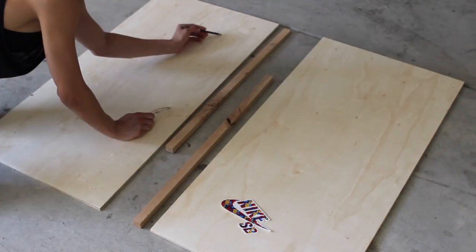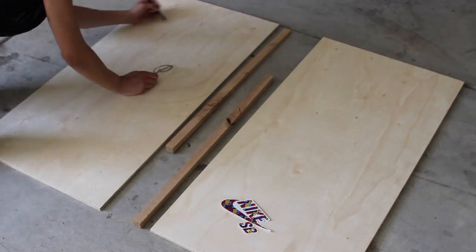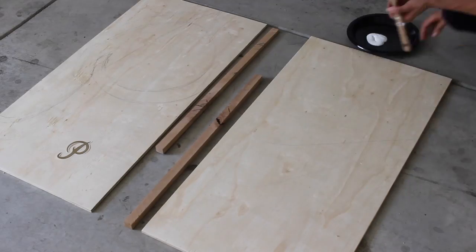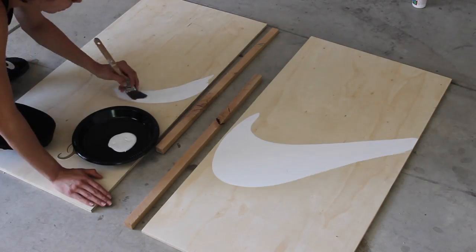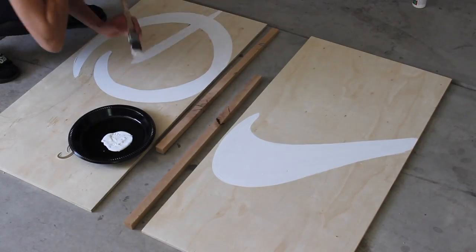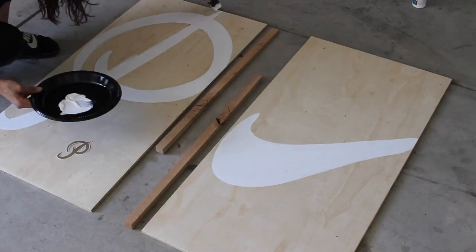So since I'm making this for my dude, I went ahead and put a Primitive logo on one side and then I put a Nike logo on the other side just to go with the theme of our house. I just freehand sketched it on with a pencil and then I took a paintbrush and your basic white craft paint that you can get from Michaels and just filled it in.